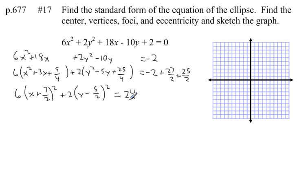Now, the last step to get this into standard form is to divide every set of terms by 24. And these two sets of terms on the left, these fractions will cancel out. They'll reduce. And here's what we'll be left with. We'll have x plus 3 halves, quantity squared, all over 4, plus y minus 5 halves, quantity squared, all over 12, is equal to 1.